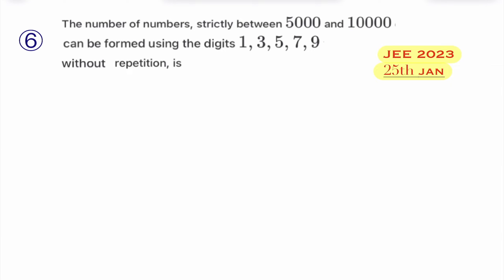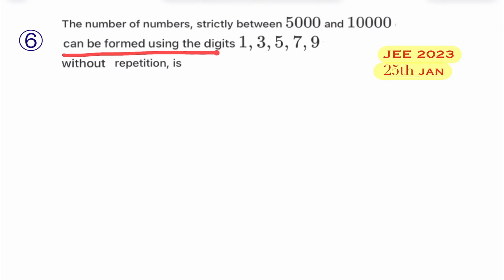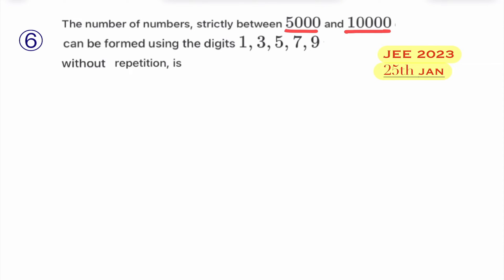We are doing all the questions of permutations and combinations — previous year JEE questions. This is the sixth question, given in 2023 in the January session. The question asks: the number of numbers strictly between 5000 and 10,000 that can be formed using the digits 1, 3, 5, 7, 9 without repetition — how many such numbers are possible?